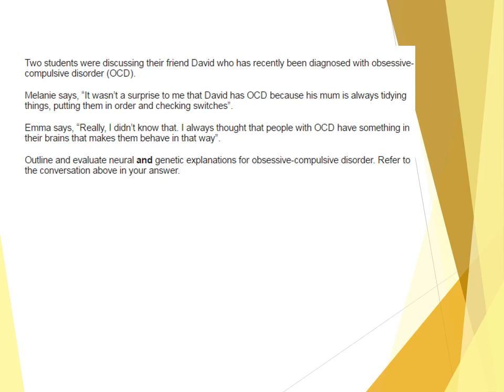For AO3 of the genetic explanation, discuss Billet's supporting evidence from MZ and DZ twin concordance rates. Then address the problem with twin and family studies: we cannot separate nature and nurture because they share an environment, which could result in developing OCD through environmental factors rather than through genetics alone.